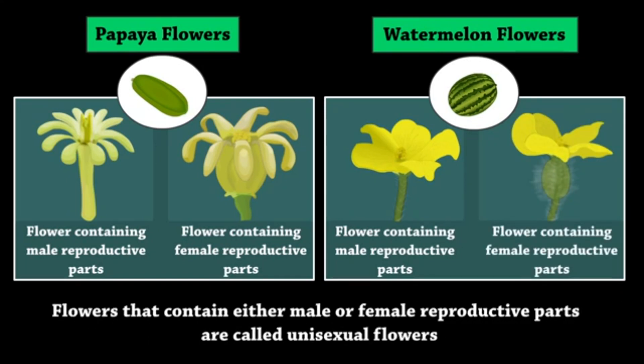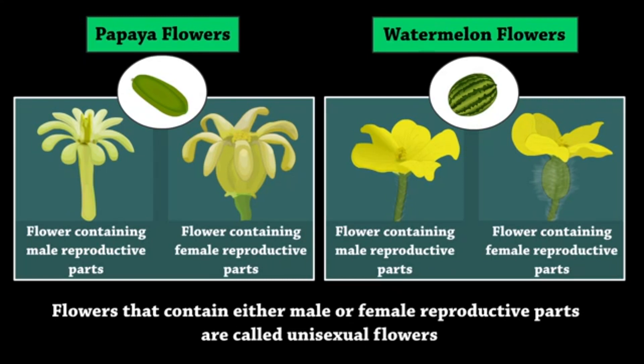Flowers that contain either male or female reproductive parts are called unisexual flowers. Papaya and watermelon are some examples of unisexual flowers.